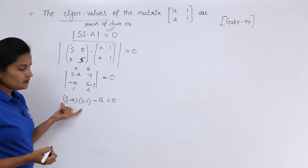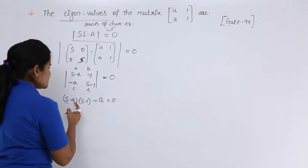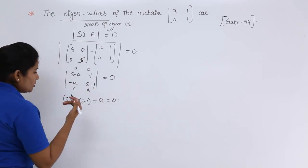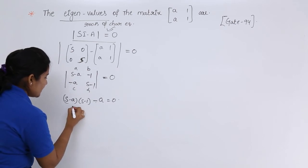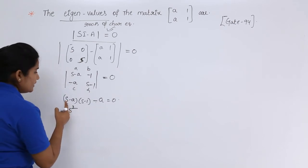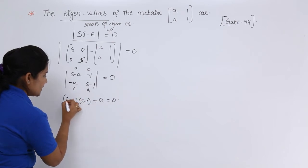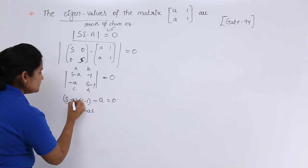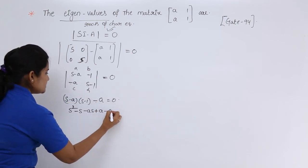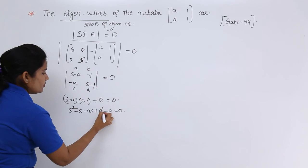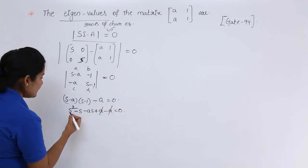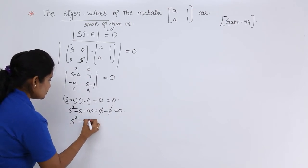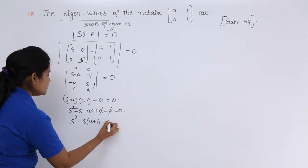Now you just consider S minus A into S minus 1 minus A is equal to 0. Now here I am taking S square, so S into S is S square minus S minus AS, and here plus A minus A is equal to 0. Plus A minus A will get cancelled and the rest is S square minus S into A plus 1 is equal to 0.